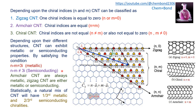In terms of conductivity, not all carbon nanotubes have the same characteristics. Some exhibit metallic behavior and others semiconducting behavior. When n − m equals a multiple of three, the nanotube is metallic; otherwise it is semiconducting. Armchair carbon nanotubes are always metallic. Zigzag nanotubes are either metallic or semiconducting. Statistically, a natural mixture will have one-third metallic and two-thirds semiconducting chiralities.